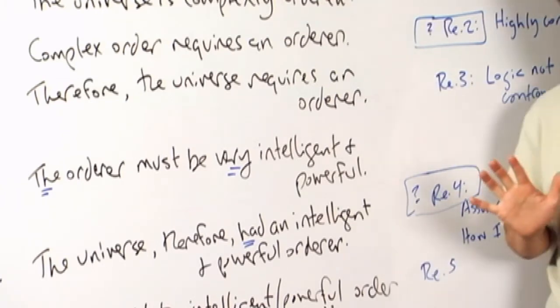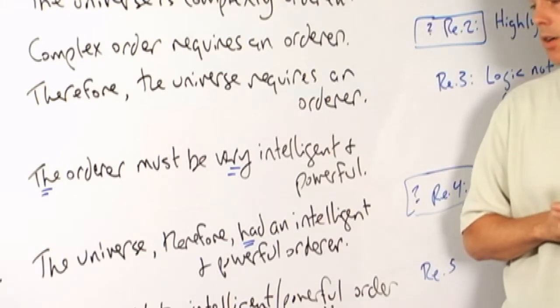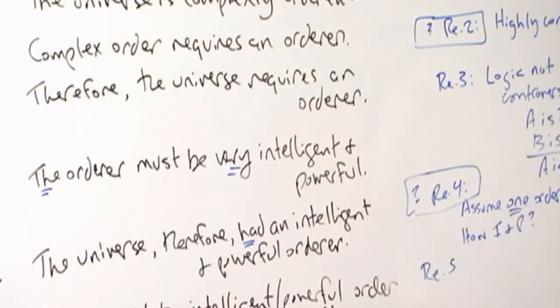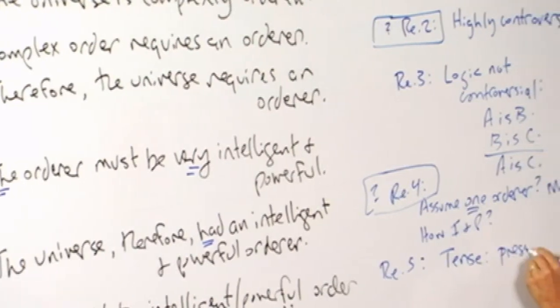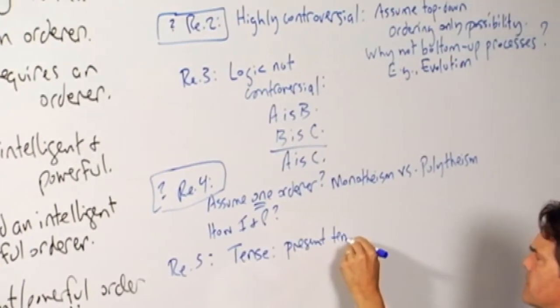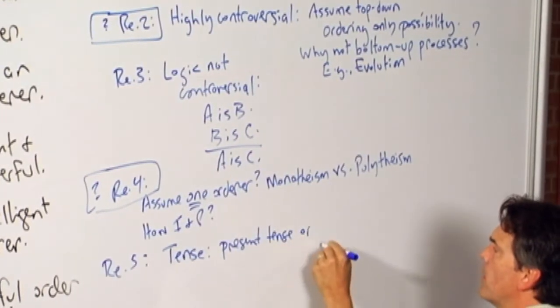which leaves open the question whether the intelligent and powerful orderer still exists or is still operative and on the scene here. So I'll just put that down here as a question to raise here. The question of tense. Should it be the present tense or the past tense?